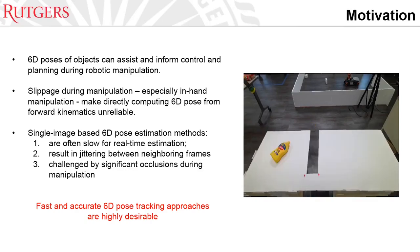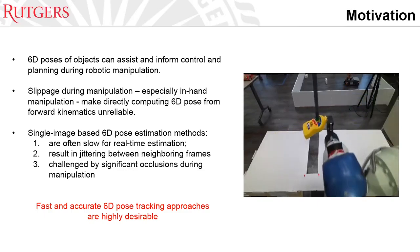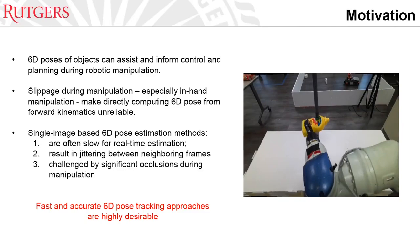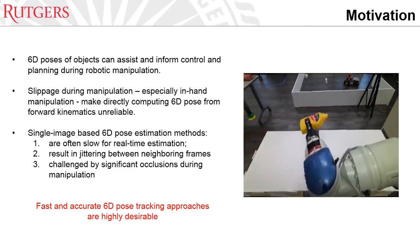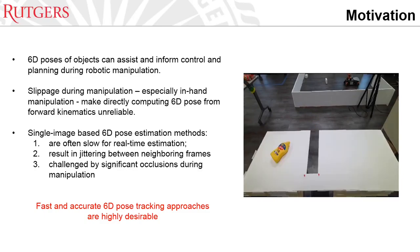Also, if we apply single-image-based 6D-pose estimation methods, they have several problems. First, they are often slow for real-time estimation. Second, they could result in jittering between neighboring frames. Third, they are challenged by significant occlusions during the manipulation. For this reason, fast and accurate 6D-pose tracking approaches are highly desirable.